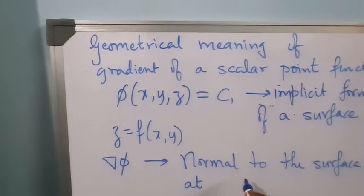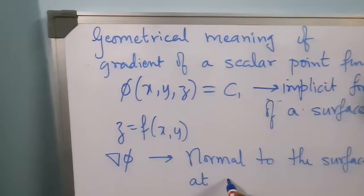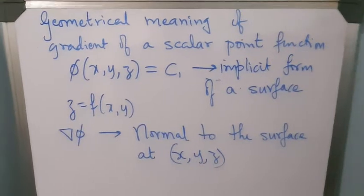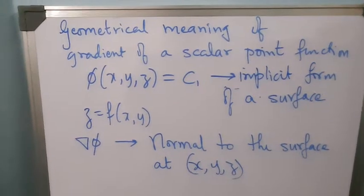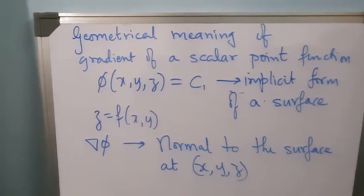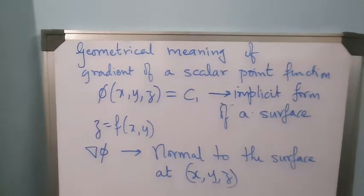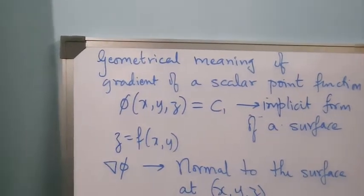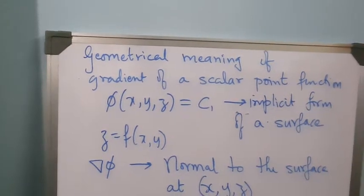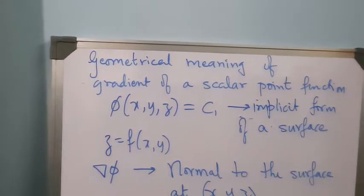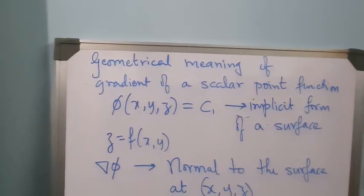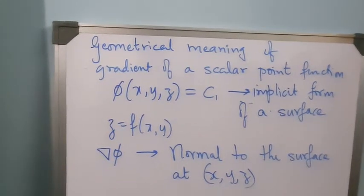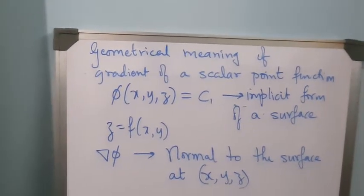Gradient φ represents the normal to the surface at the point (x, y, z). That is the reason we often hear the term gradient especially in fields where we need to know the slope or inclination at every point — for example, in the banking of roads. Gradient is a common term used in banking of roads; the higher the gradient, the more the inclination.